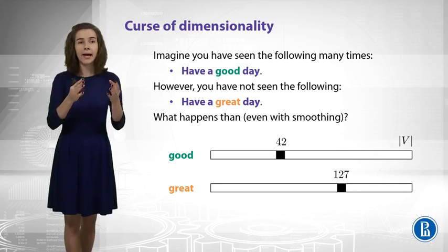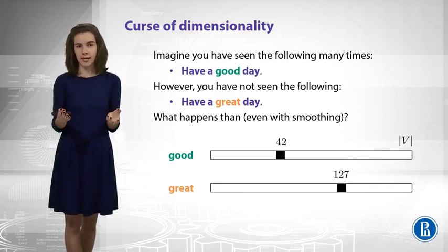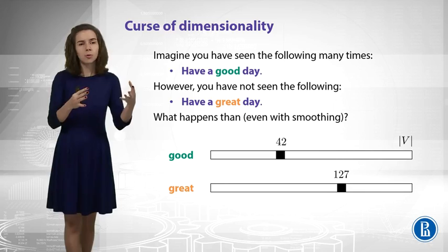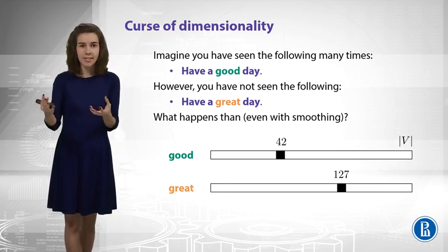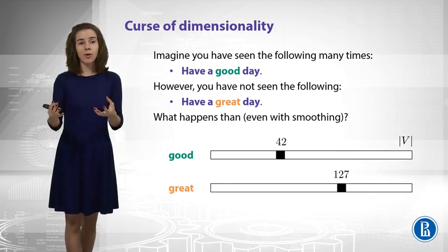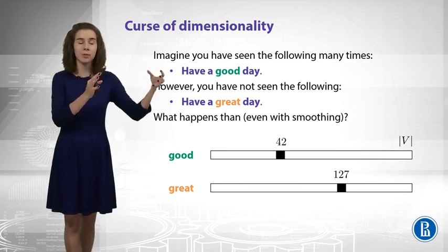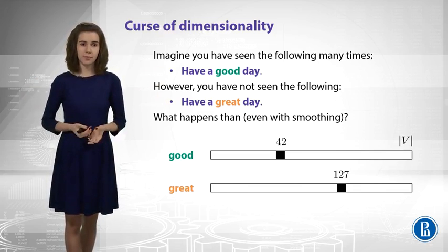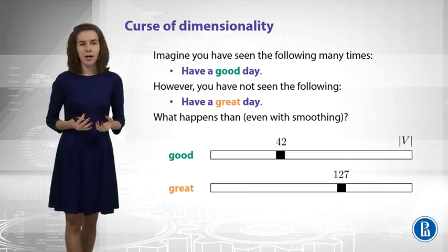Imagine that you see have a good day a lot of times in your data, but you have never seen have a great day. So, if you could understand that good and great are similar, you could probably estimate some very good probabilities for have a great day, even though you have never seen this. But if you treat the words independently, you cannot do this.